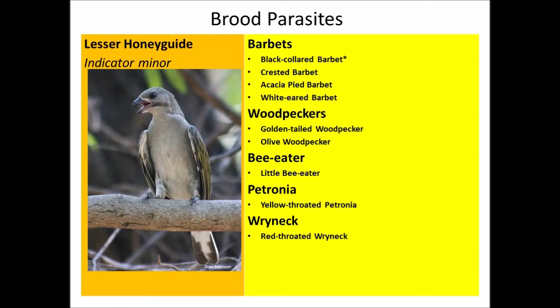The Lesser Honeyguide, Indicator minor, has fewer hosts. These include the black-collared barbet, crested barbet, acacia pied barbet, and white-eared barbet. Among woodpeckers, the golden-tailed and olive woodpeckers. Among bee-eaters, only the little bee-eater is a host. Additional hosts include the yellow-throated petronia and the red-throated wryneck.